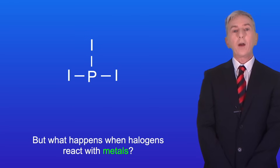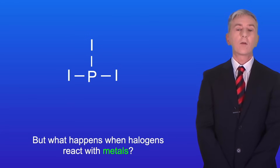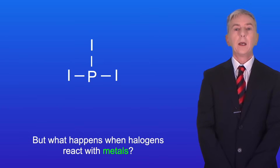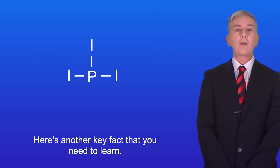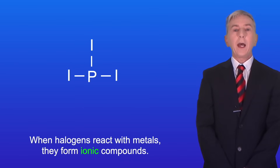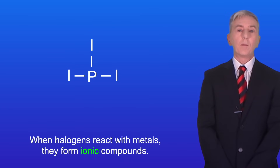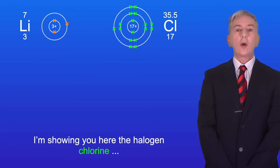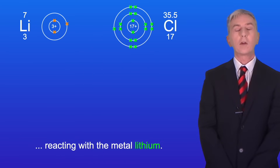But what happens when halogens react with metals? Here's another key fact that you need to learn: when halogens react with metals they form ionic compounds. I'm showing you here the halogen chlorine reacting with the metal lithium.